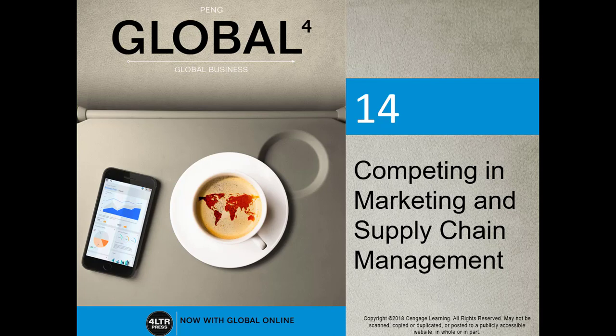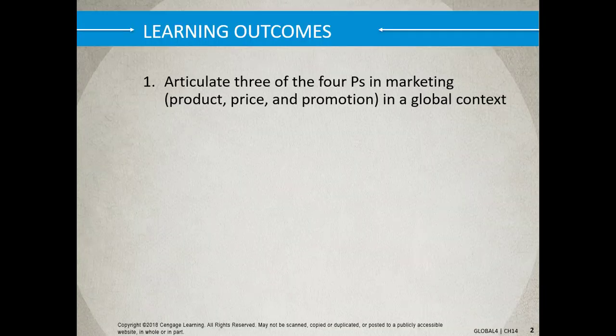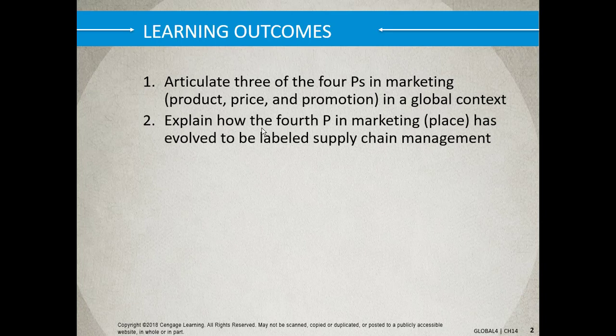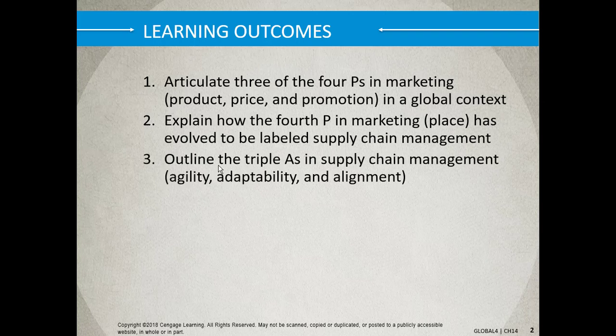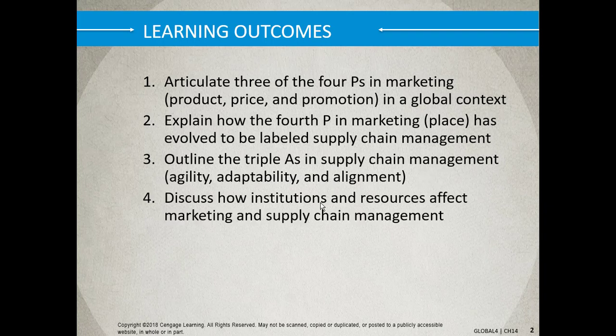He did this because everything in global business really lives or dies on supply chain management. That's such a critical aspect of trade that it has its own emphasis. Let's go with the learning outcomes. We'll look at three of the four P's in marketing, then the fourth P and how it's evolved to be labeled supply chain management. We'll look at the triple A's — agility, adaptability, and alignment in supply chain management — how institution and resources affect marketing and supply chain management, and then the implications for action.